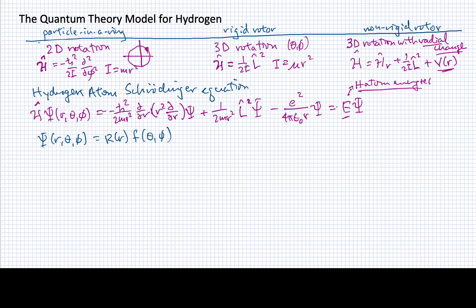For example, this term that represents the kinetic energy of the radial part, I'm simply going to write as capital K with a little r to remind us that this is the kinetic energy of the radial part.